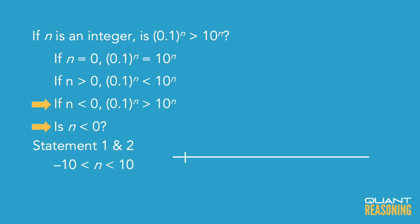But all of those integer values in that range are fair game. Some of them are negative. Some of them are not negative. So even when we combine these statements, we can't definitively answer the question.